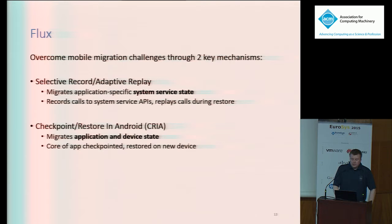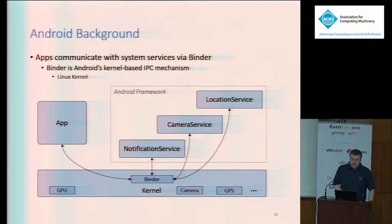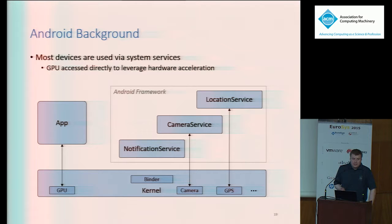In Android, applications are either in the foreground — visible to the user — or in the background where the user is unable to interact with them. Applications interact extensively with system-provided services. In Android, some of these services are the camera service, the location service, and the notification service. To communicate with these services, Android uses a single IPC mechanism called Binder, implemented as a kernel driver inside the Android kernel. Applications don't typically access devices directly; instead, they interact with system services that manage devices on their behalf. A notable exception is the GPU, which applications interact with directly via OpenGL.